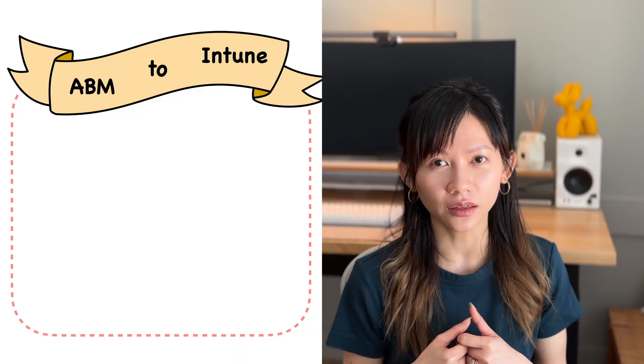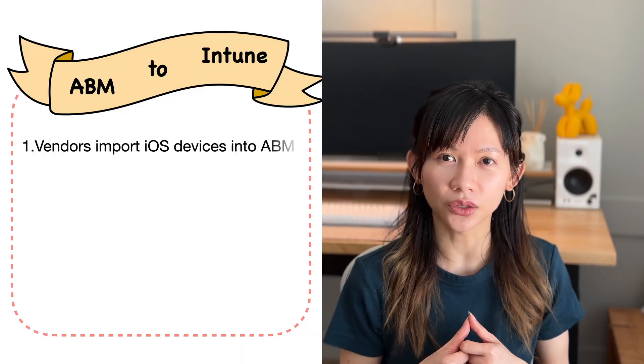Let's start from a 10,000-foot view. The process is specifically for iOS supervised devices. First, the vendor imports devices into ABM — Apple Business Manager. If you haven't set up this connection, please speak to your vendor and they can send you instructions on how to set this up. This step is how Apple knows who the owner of the device is.